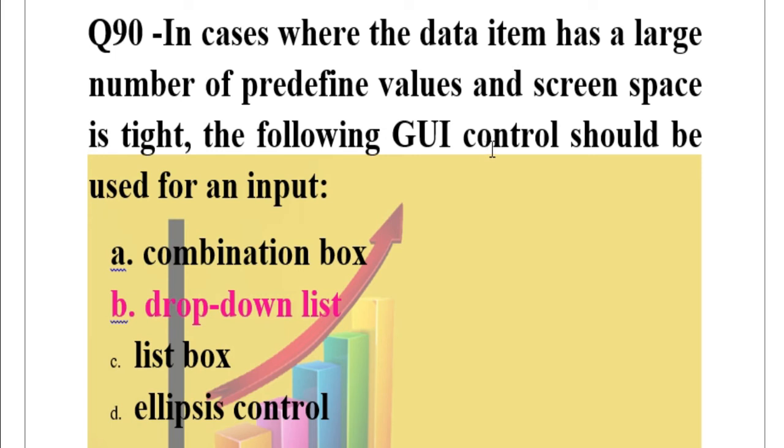So the graphic user interface input that would be best is drop-down list because it is small in size and can show multiple options through a single click. This is the best option: drop-down list. No combination box, no list box, no ellipsis control.